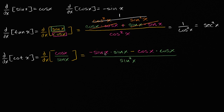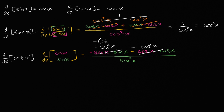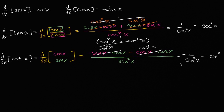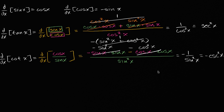Now what does this simplify to? The numerator is negative sine squared of x minus cosine squared of x. We can factor out the negative to get negative times the quantity sine squared of x plus cosine squared of x, which is just one by the Pythagorean identity. So this is negative one over sine squared x, which is the same thing as negative cosecant squared of x.